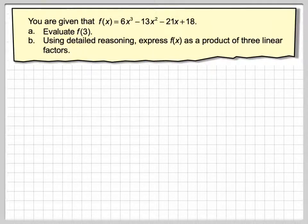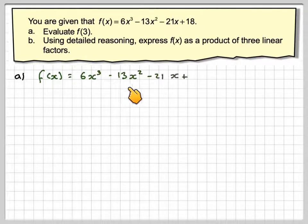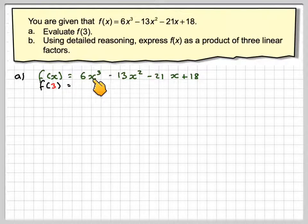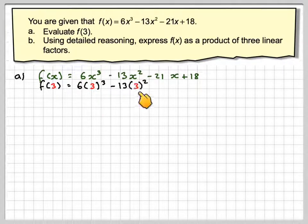This question is about using the remainder and factor theorem. So we've got f of x is equal to 6x cubed minus 13x squared minus 21x plus 18. f of 3 means put a 3 in everywhere that there's an x. So it's 6 times 3 cubed minus 13 times 3 squared minus 21 times 3 plus 18.